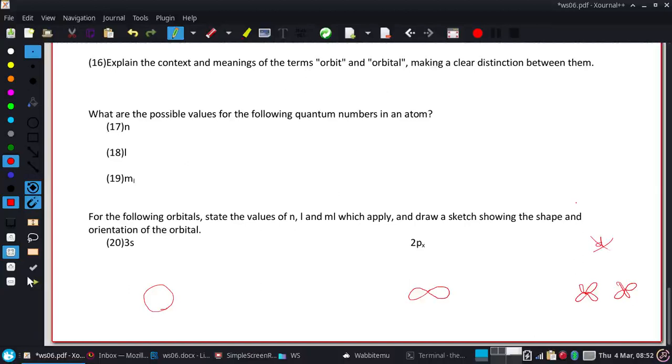So 3s tells me the n equals three, because of that three right there, and the s tells you what the l value is. So you have your four main types of orbitals that we see, and their l's go up by integers, starting at zero. So, being that this is an s, we have an l of zero.